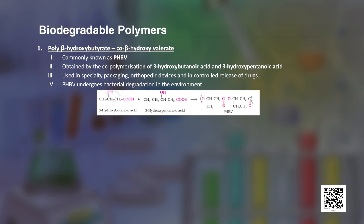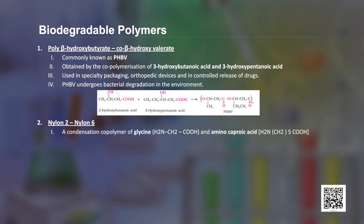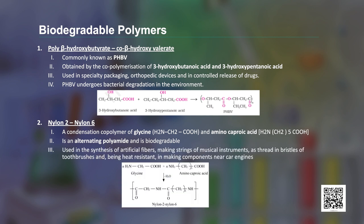PHBV undergoes bacterial degradation in the environment. Another biodegradable polymer is Nylon 2-Nylon 6, a condensation polymer of glycine and aminocaproic acid, also known as an alternating polyamide. It is used in the synthesis of artificial fibers, strings of musical instruments, bristles of toothbrushes, and, being heat resistant, as car components near the engine.